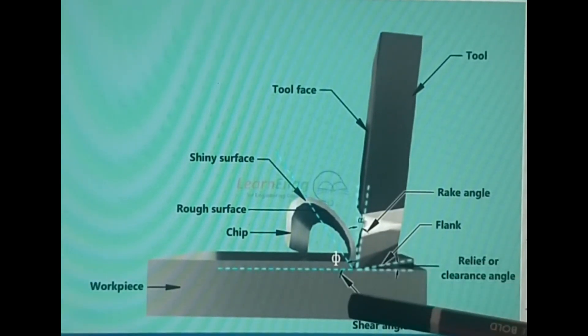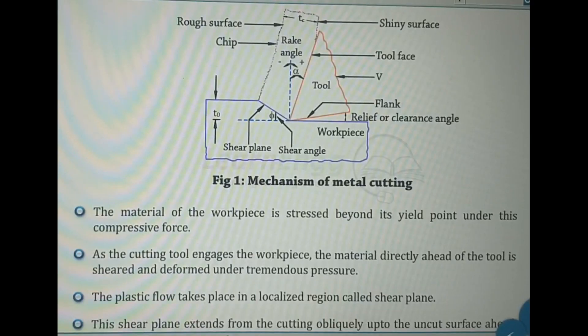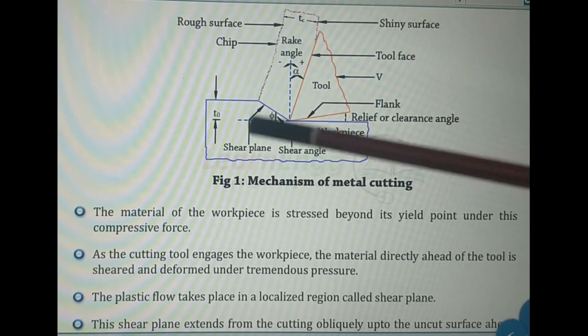Sheared material flows along the cutting tool face are called chips. Now let me explain to you the mechanism of metal cutting using this diagram.